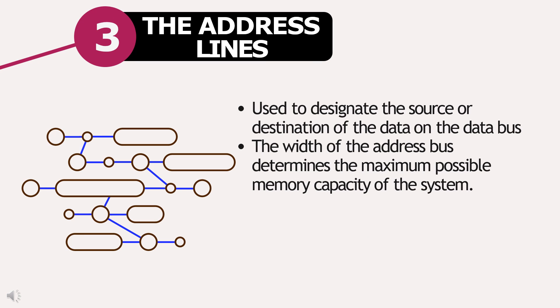Address Line: The address line is used to designate the source or destination of the data on the data bus. The width of the address bus determines the maximum possible memory capacity of the system.